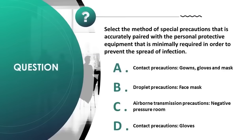Select the method of special precautions accurately paired with the minimum personal protective equipment required to prevent spread of infection: A) contact precautions — gowns, gloves, and mask; B) droplet precautions — face mask; C) airborne transmission precautions — negative pressure room; D) contact precautions — gloves. Correct answer is B.